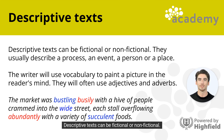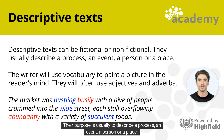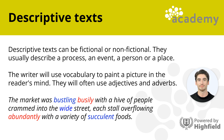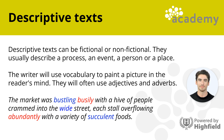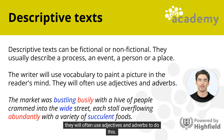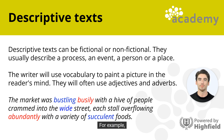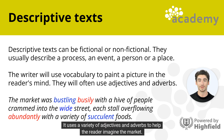Descriptive texts can be fictional or non-fictional. Their purpose is usually to describe a process, an event, a person, or a place. The writer will use vocabulary to paint a picture in the reader's mind. They will often use adjectives and adverbs to do this. For example, the sentence below uses a variety of adjectives and adverbs to help the reader imagine the market.